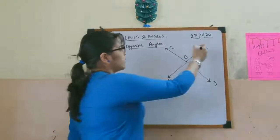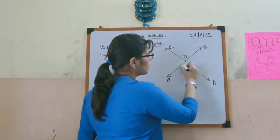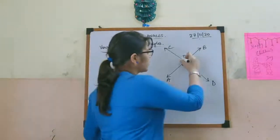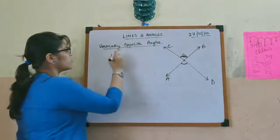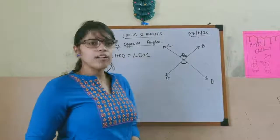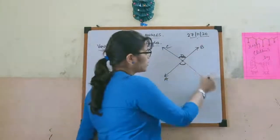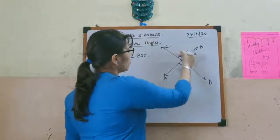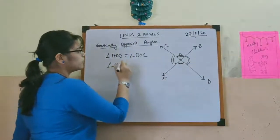Let us see how. If we look at angle AOD, angle AOD is one angle and exactly the opposite one is angle BOC. So angle AOD equals angle BOC. Also, looking at the other side, we have angle BOD and angle AOC — this angle and that angle.